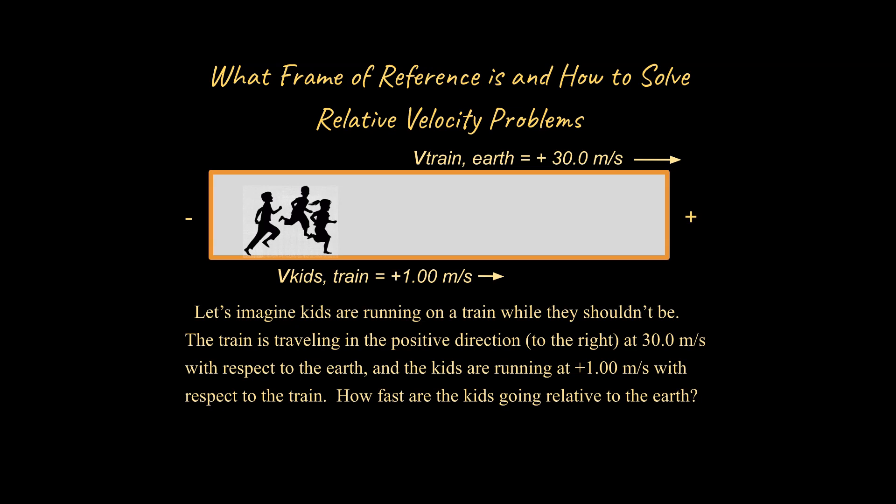Some of this starts out with an easy example. Let's imagine kids are running on a train. They shouldn't be running, but they've been on this train for a long time and need to get some energy out. Let's say the train is traveling in a positive direction of 30 meters per second to the right, and the kids are traveling at 1 meter per second to the right with respect to the train. My question is, how fast are the kids going relative to the Earth? Well, that's going to be pretty easy. That's 31 meters a second with respect to the Earth.